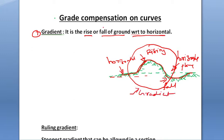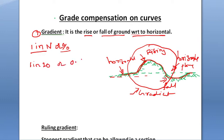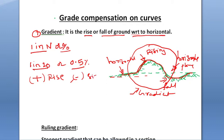Gradient is indicated in the form of 1 in N or in terms of percentage. For example, 1 in 20 or 0.5 percentage — this is the magnitude of gradient. If the gradient is rising, it is shown with a positive sign. If the gradient is falling, it is shown with a negative sign.